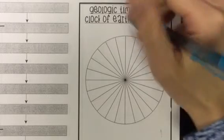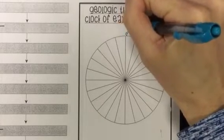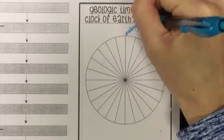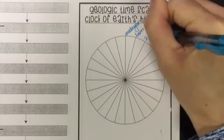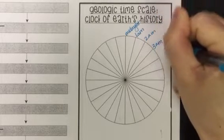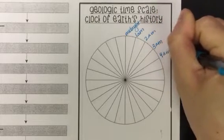So we need to label this first. We're going to start at the top with midnight, and we're going to start with 1 a.m., 2 a.m., 3 a.m., and keep going around.